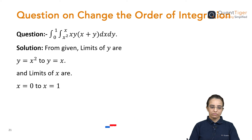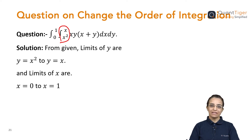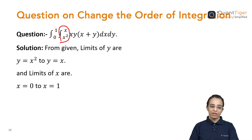Now, if you see here — if you focus on this — these limits are given in the form of x, like x square to x. So clearly, the limits are given in terms of x. So we have identified that y is equal to x square and y is equal to x — that is y's limit, which we found from the given integration.